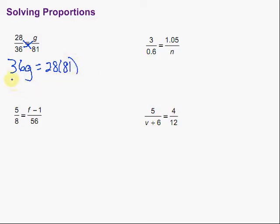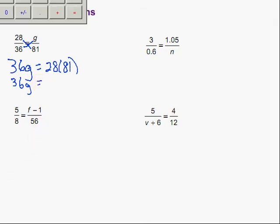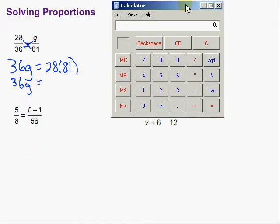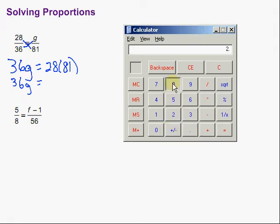And then we'll go ahead and do that multiplication. So we have 36g equals 28 times 81. Let's just grab our calculator here. 28 times 81, which is 2268.